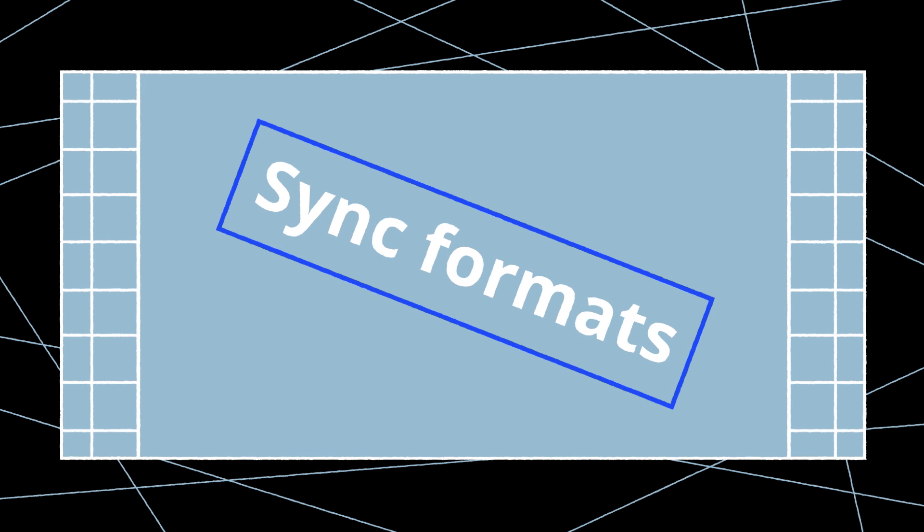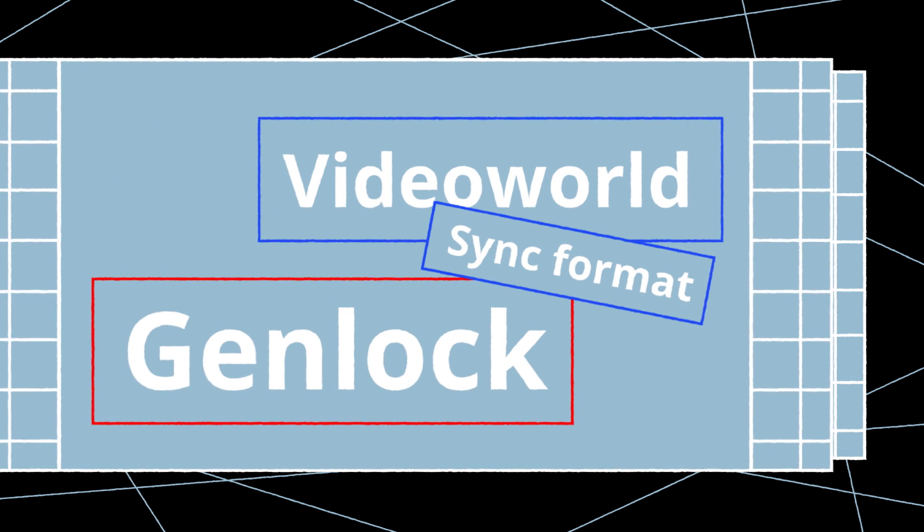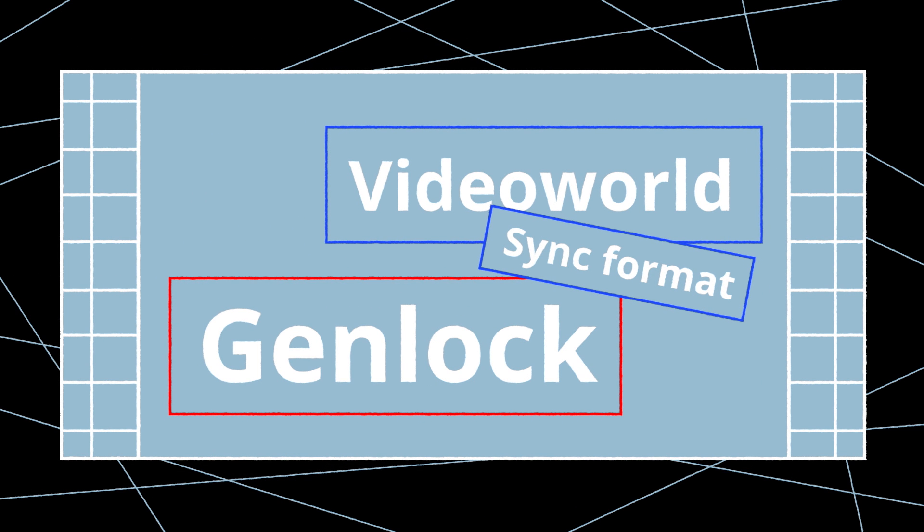So let's take a look at different sync formats. The video sync format is called Genlock. Basically, it's an impulse generated per video line and is specified by video resolution and frame rate.